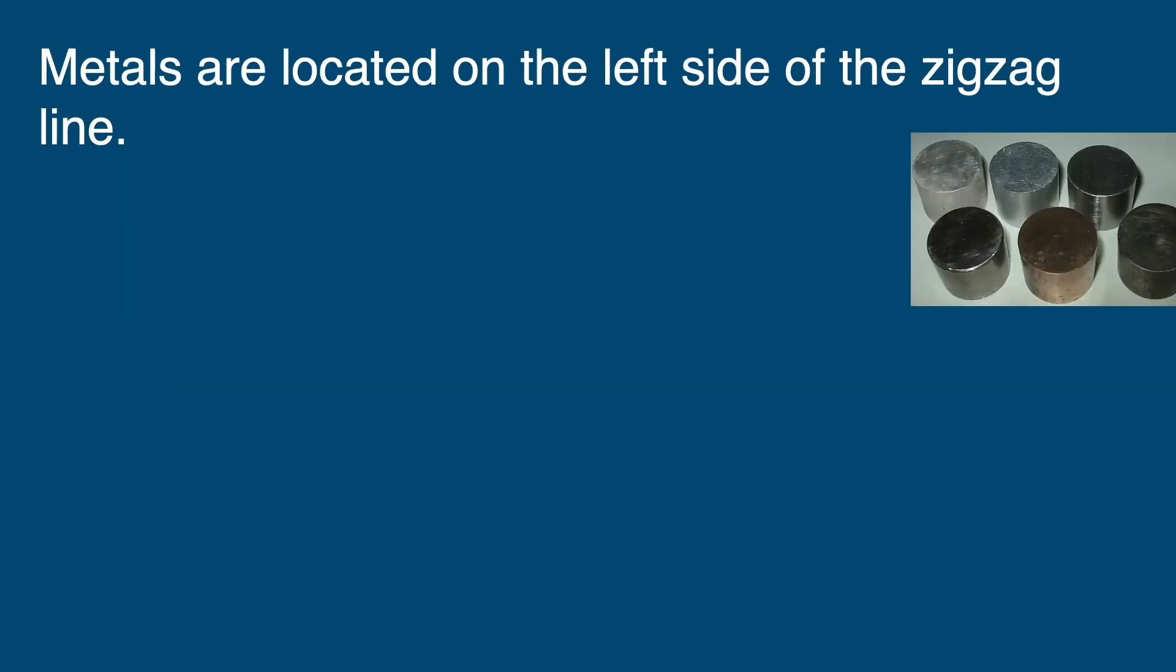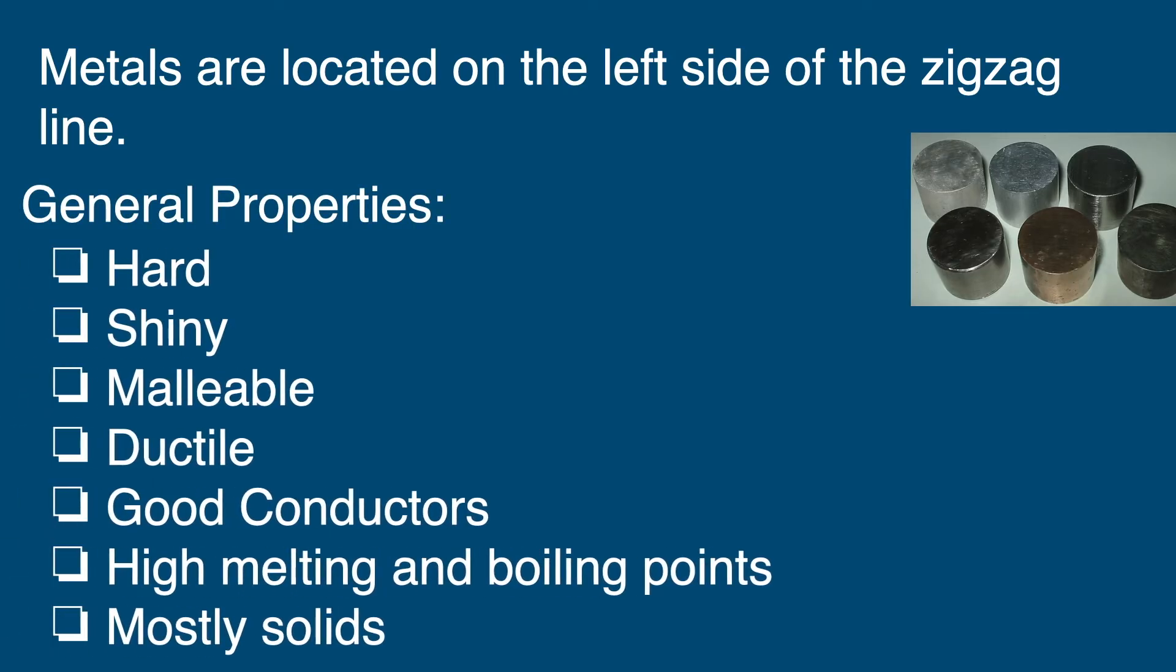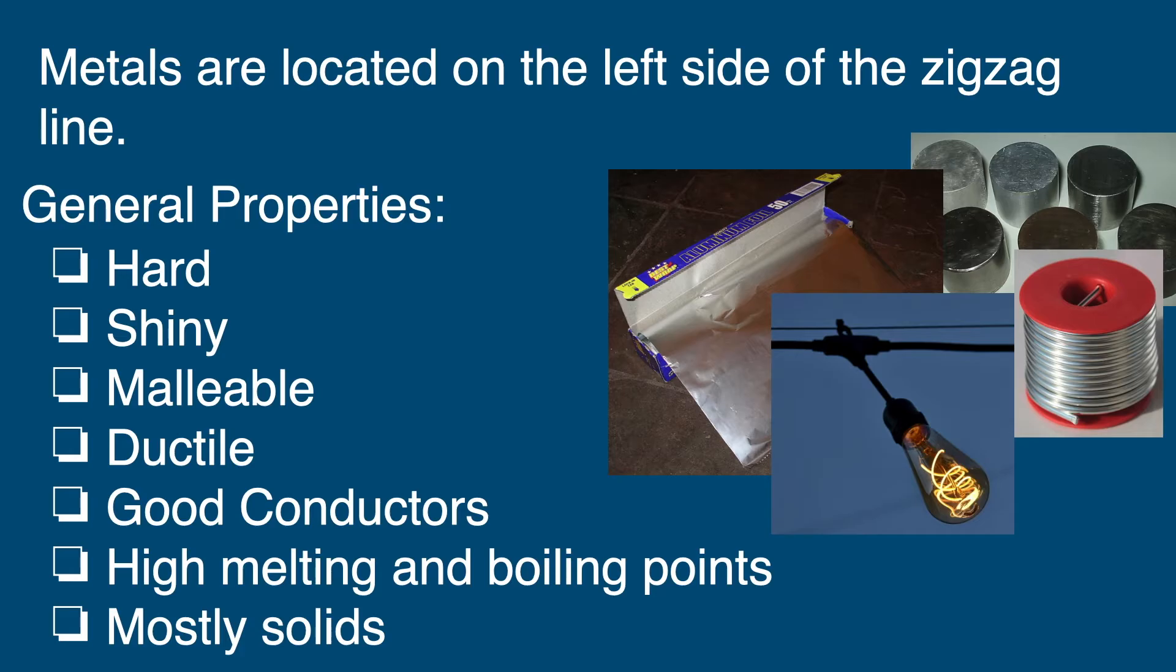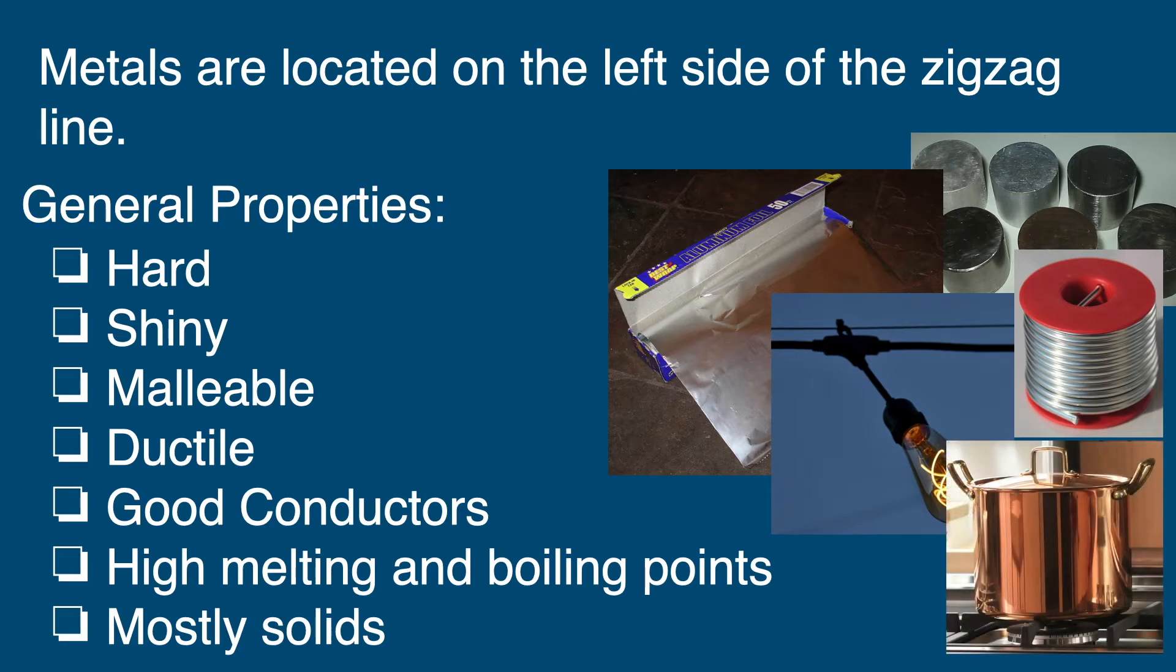Metals are located on the left side of the zigzag line. Some general properties of metals are that they are hard, shiny, malleable, ductile, good conductors of heat and electricity, they have high melting and boiling points, and they're mostly solids.